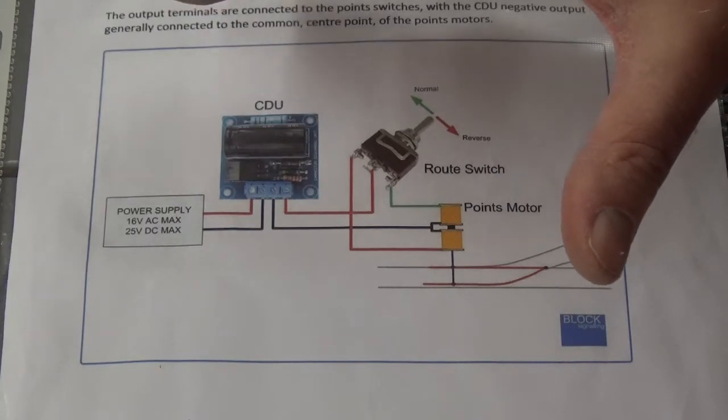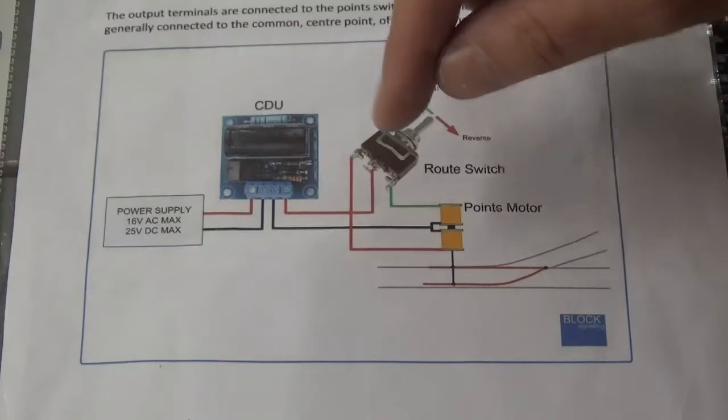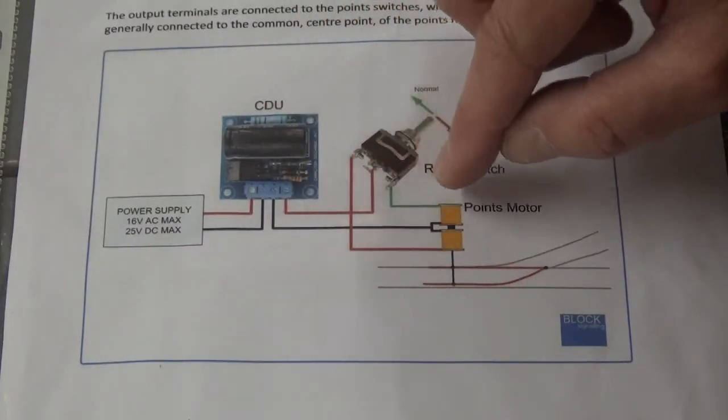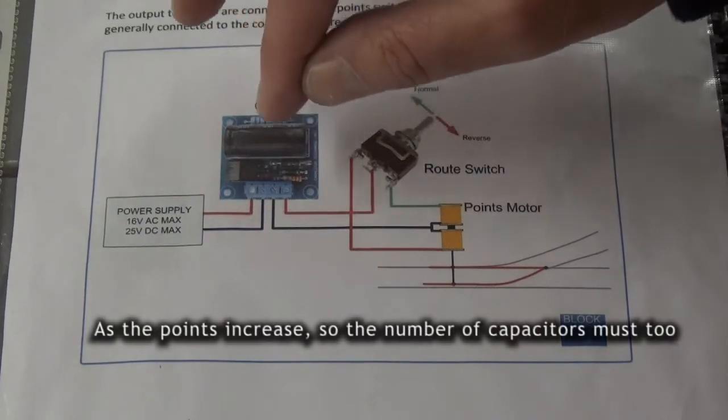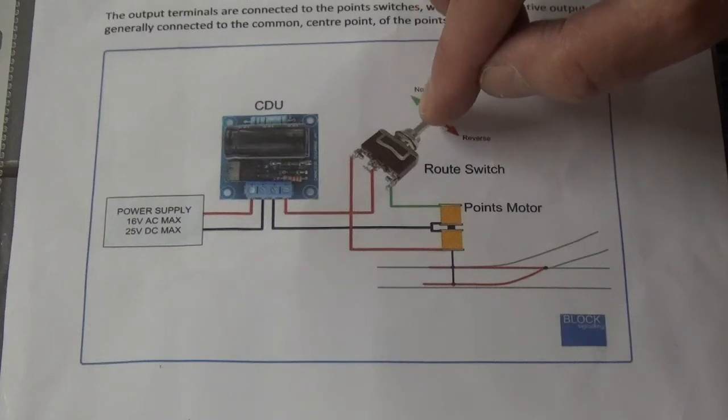Doing it under a layout gets a little bit more confusing. The other thing I've found is I've got two point motors and two points operating off of the same CDU, and in order for one to operate,